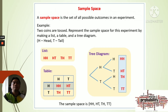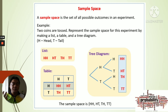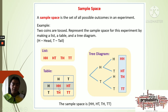For the sample space example, we have tossing two coins. When tossing a coin there are two possible outcomes: head and tail. If you toss two coins, you combine those outcomes. In a table diagram, H is for head and T is for tail — for the first coin and the second coin. The results can be head-head, head-tail, tail-head, or tail-tail.